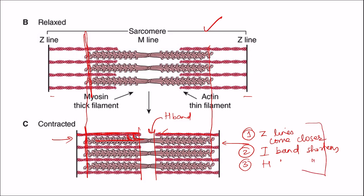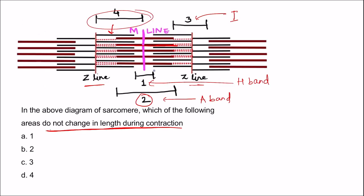A useful mnemonic: HIS — H band shortens, I band shortens, and S for sarcomere shortens (Z lines come closer). Coming back to the question of which area does not change in length during contraction: the A band doesn't change in length. In this diagram the A band is the second marking, so the second is the correct answer.